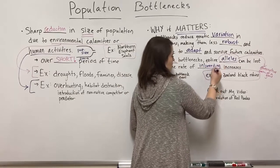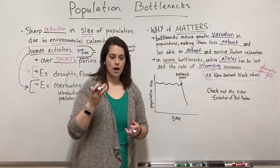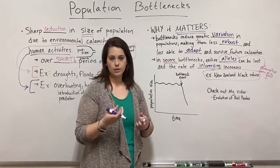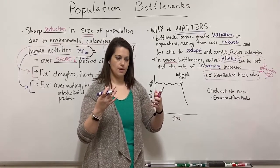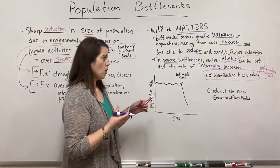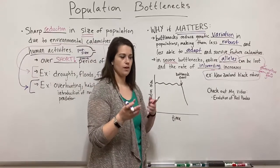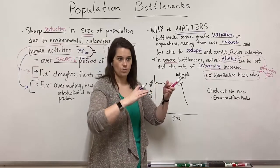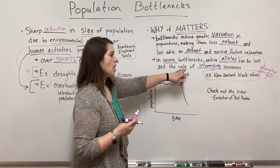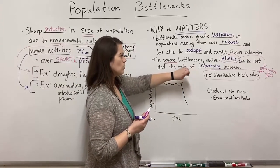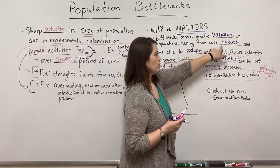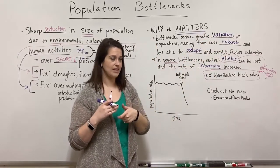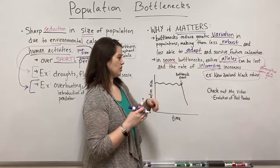Inbreeding means that siblings from the same clutch or nest, or a mother and son, or a father and daughter are mating with each other. This weakens the population further — it's much less robust. There's less genetic variation because close relatives are already so genetically similar, and that makes these populations even less able to adapt.